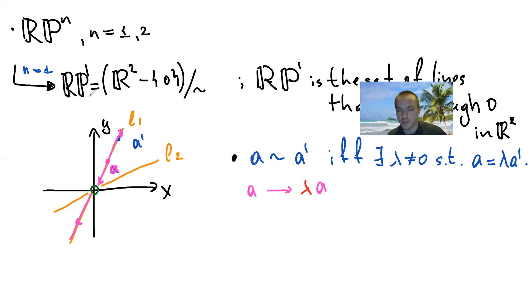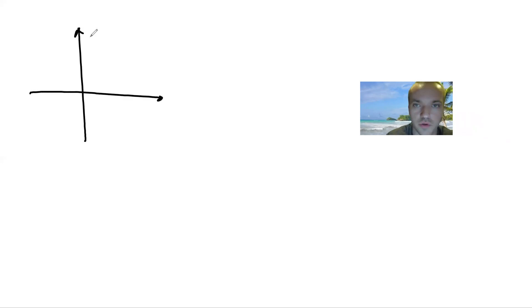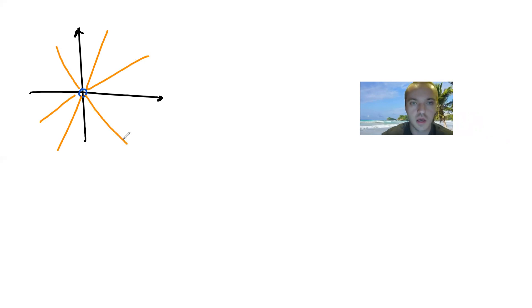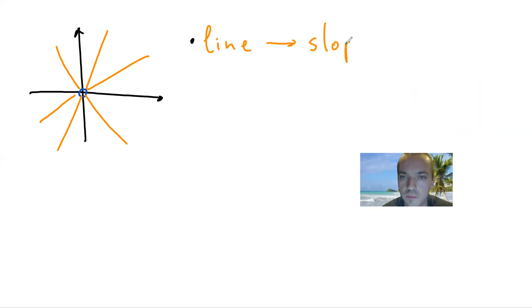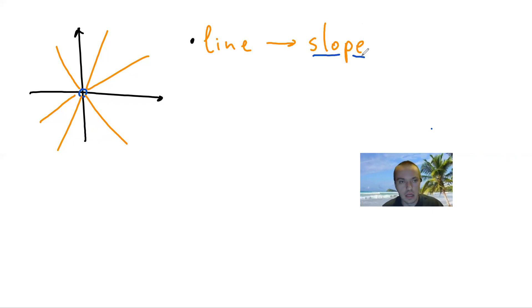But how can we visualize RP¹? The unit circle is going to be our friend. We take R² without the origin and look at the set of lines through the origin. Every line gives you a slope, and each line can be represented by an angle theta. So if we think about RP¹ in this way, the points of the space are lines, each represented by this angle theta.